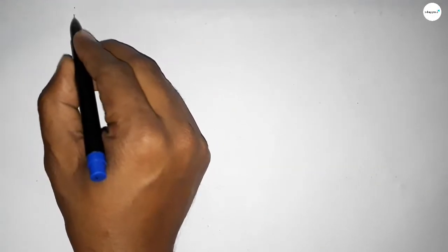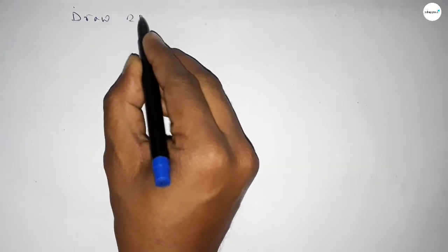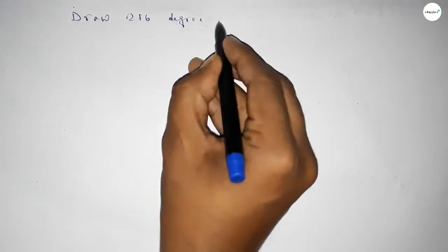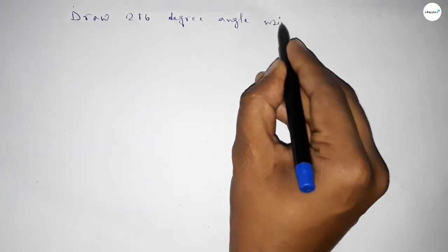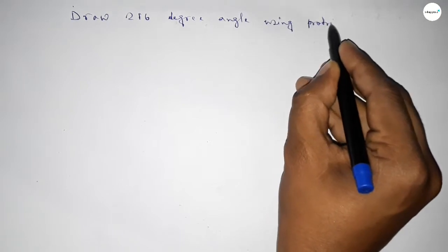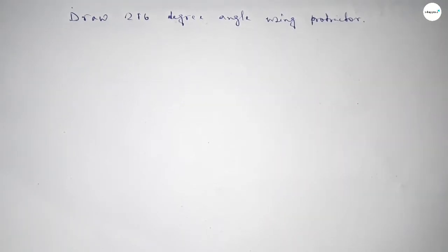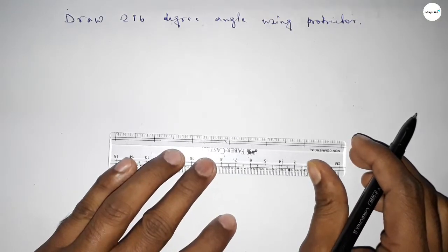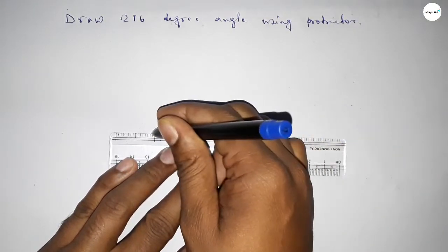Hi everyone, welcome to SI Share Classes. Today in this video we have to draw a 216 degree angle using a protractor. So let's start the video. First of all, we have to draw here a straight line of any length.